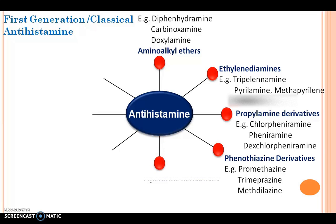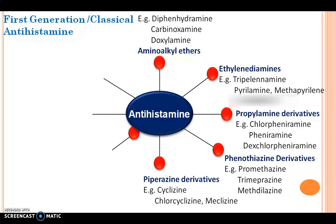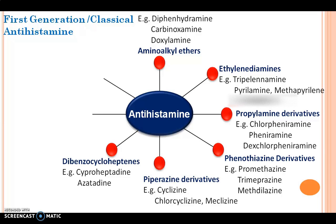Moving to the next class: piperazine derivatives. Examples are cyclizine, chlorcyclizine, meclizine, and buclizine. Next is dibenzocycloheptine. Examples are cyproheptadine and azatadine.